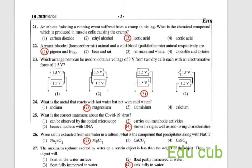Twenty-one: an athlete finishing a running event suffered from cramp in his leg. What is the chemical compound which is produced in muscle cells causing the cramp? When there is not enough oxygen when you are running or doing heavy work, the chemical lactic acid is produced in muscles, which may cause a cramp. The answer is lactic acid, not carbon dioxide, ethyl alcohol or acetic acid. When there is not enough oxygen, lactic acid will be produced, then it will cause a cramp.